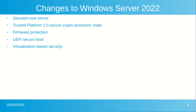Virtualization-based security, or VBS, uses hardware virtualization features to create and isolate a secure region of memory from the normal operating system. This protects your computer against an entire class of vulnerabilities used in cryptocurrency mining attacks. VBS also allows for the use of Credential Guard, where user credentials and secrets are stored in a virtual container that the operating system cannot access.